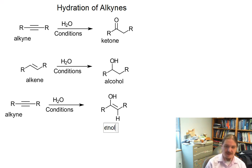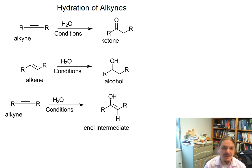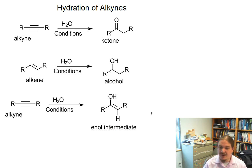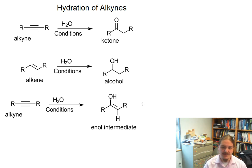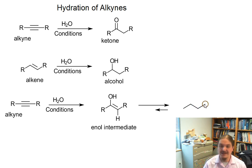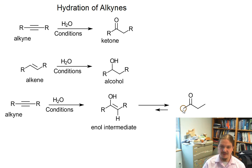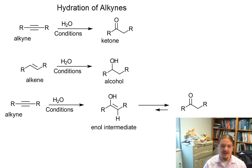We get this intermediate called an enol. I'm calling it an intermediate because this is not the end product. There's a whole video about tautomerization which explains why enols are not the final product. It turns out that under the conditions of this reaction, this enol is in equilibrium with the ketone, and the ketone is favored at equilibrium.